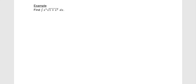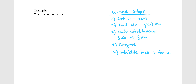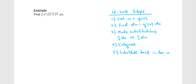Here are the general u-substitution steps for indefinite integrals. First, let u equal some function in the integrand. Second, find du — the derivative of that function times dx. Third, make the necessary substitutions to convert everything from x to u. Fourth, integrate with respect to u. Fifth, substitute back in for u to express the answer in terms of x.